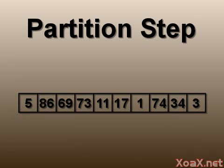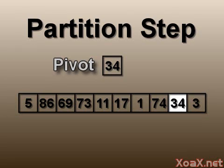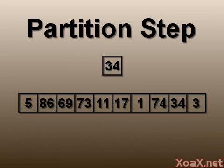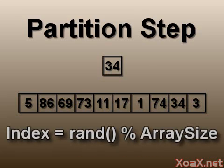To explain the partition step, we begin with an unsorted array, then we select one of the elements of the array to be the pivot. Ideally, the pivot should be the middle value of the array. However, finding this requires too much time, so we will use a faster method and hope for a reasonably good result. For our code implementation, we will simply select a random element for our pivot.